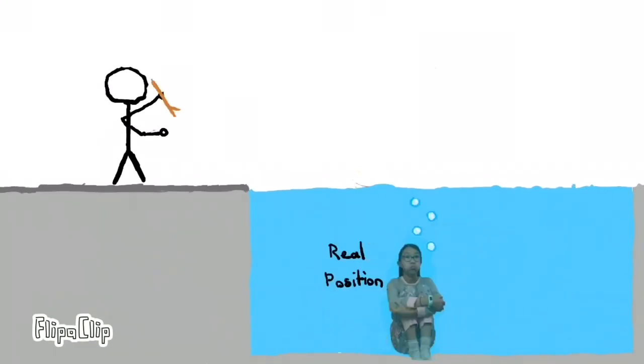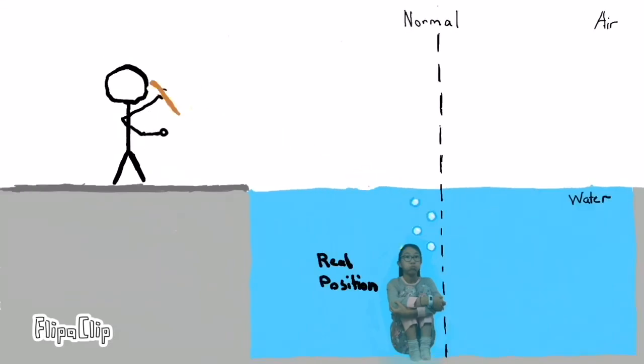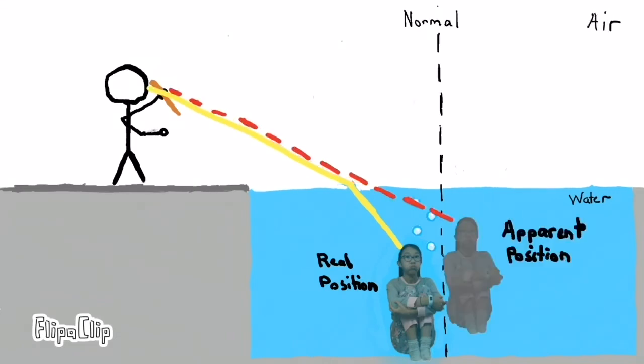Refraction also happens if you are out of a swimming pool and you see something in it. When you try to throw something at it, you will miss. This is because the light reflecting off the object is refracted as it goes into the air and into your eyes. This makes the object look like it is here, but it's actually there.